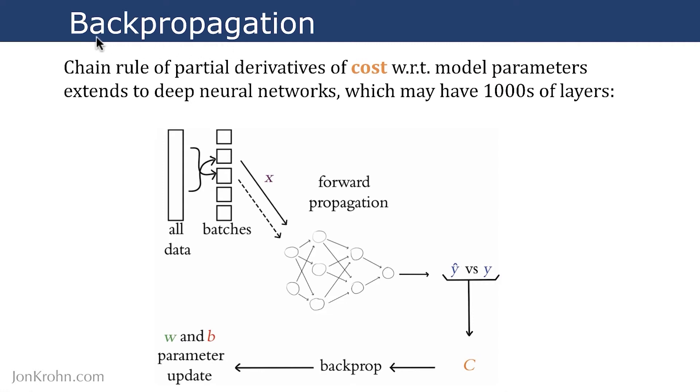This idea of backpropagation, you actually already know all of the underlying theory associated with it. It's just the chain rule of partial derivatives of cost. That chain rule of partial derivatives of cost, like mean squared error cost we talked about in the preceding video, that same chain rule of partial derivatives of cost with respect to our model parameters extends to the deepest neural networks, which may have thousands of layers.